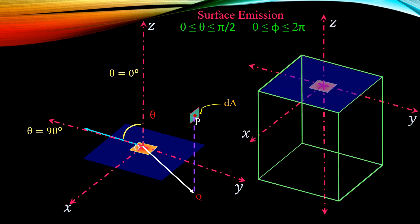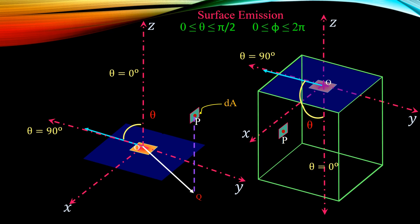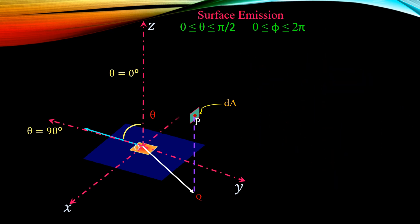At theta equal to 90 degrees, the bottom boundary is reached, and no emission can take place below this boundary. In the case of emission from a surface on the top boundary, theta angle is measured from the negative z-axis. As we move away from the z-axis, theta increases and reaches 90 degrees at the y-axis, where the top boundary is reached and no emission can take place above this boundary. Thus, theta varies only between 0 and π/2 for the surface emission case.